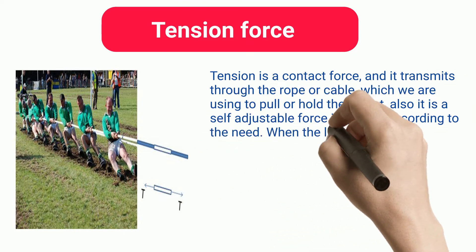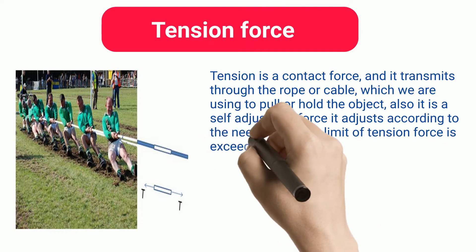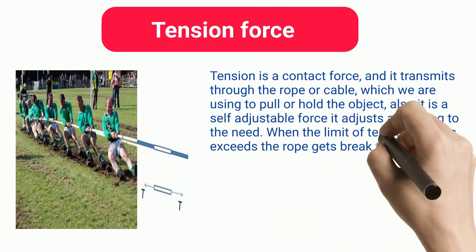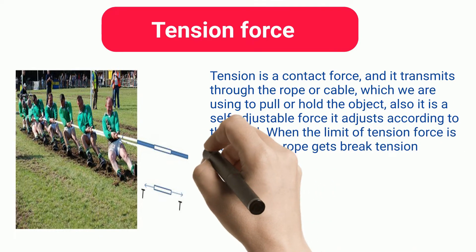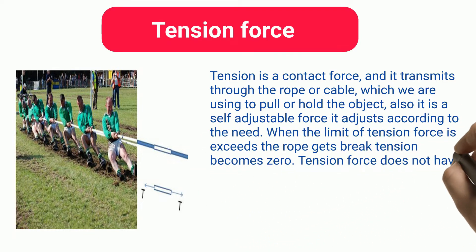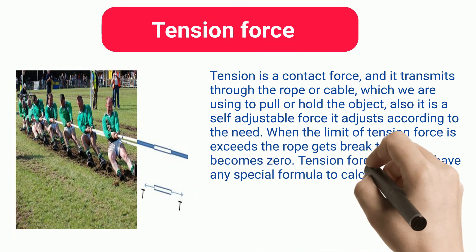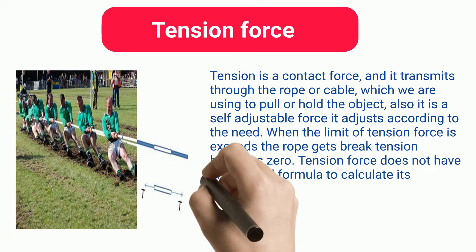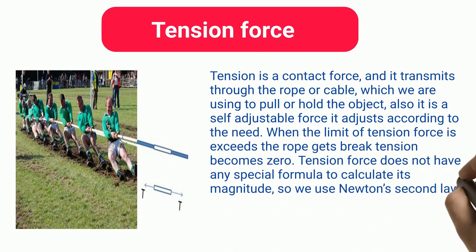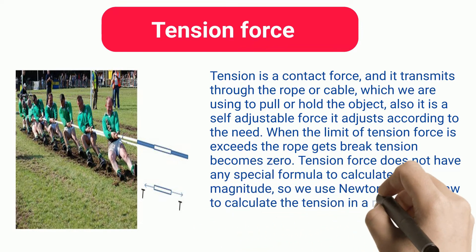When the limit of tension force is exceeded, the rope breaks and tension becomes zero. Tension force does not have any special formula to calculate its magnitude, so we use Newton's second law to calculate the tension in a rope or cable.